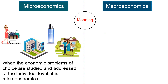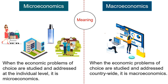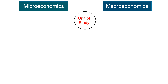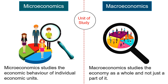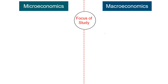Moving on to the differences between micro and macroeconomics. In terms of meaning, when the economic problems of choice are studied and addressed at the individual level, it is microeconomics. However, when they are studied and addressed countrywide, it is macroeconomics. Regarding the unit of study, microeconomics studies the economic behavior of individual economic units — it ascertains how an individual, be it producer or consumer, makes decisions and what factors affect such decisions. Macroeconomics studies the economy as a whole. Simply put, microeconomics studies trees, i.e., individual units, while macroeconomics studies the whole forest, i.e., the economy.